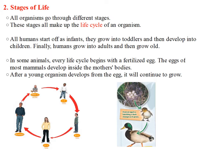And we can see it in the first picture on the left. Now in some animals, every life cycle begins with a fertilized egg. The eggs of most mammals develop inside the mother's bodies. After a young organism develops from the egg, it will continue to grow.